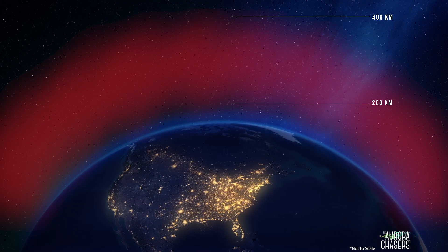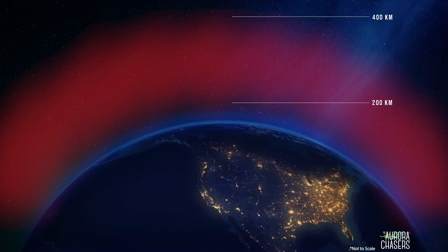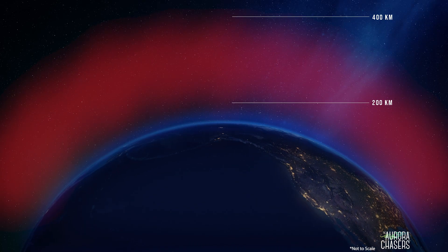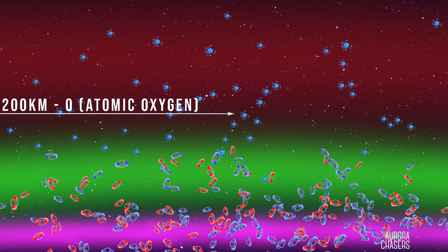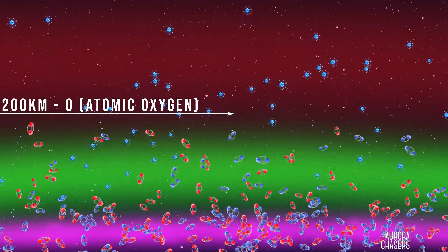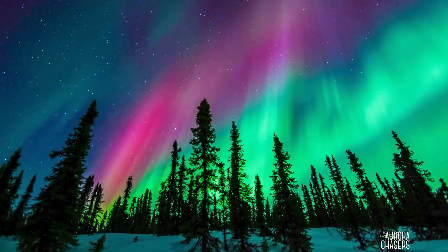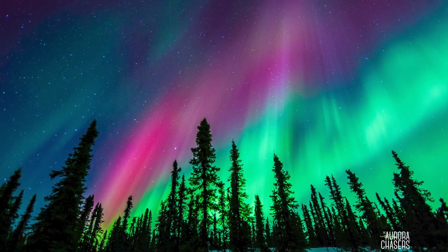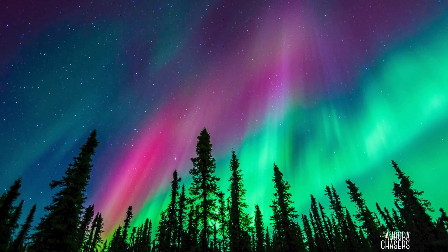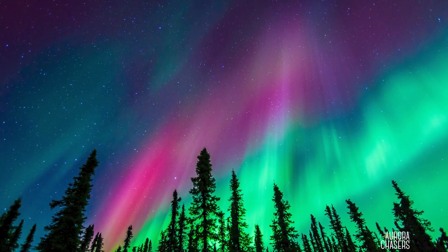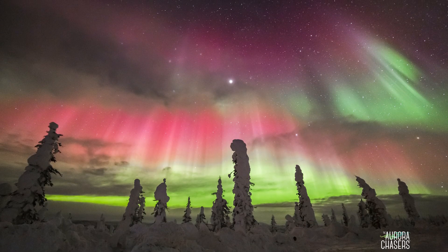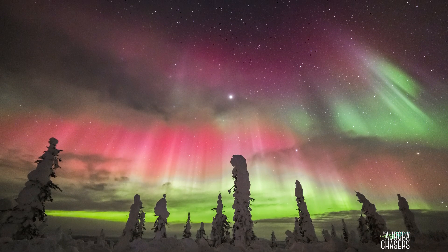The reds are quite rare — in fact, we might see those a couple of times a year. They occur at 120 miles, or 200 kilometers, above the Earth and up to 400 kilometers. At that altitude, oxygen atoms are dominant, but the atmosphere is thin and very spread out. This means those atoms of oxygen react, or charge up, much slower. Therefore, reds aren't often visible at high-latitude locations.